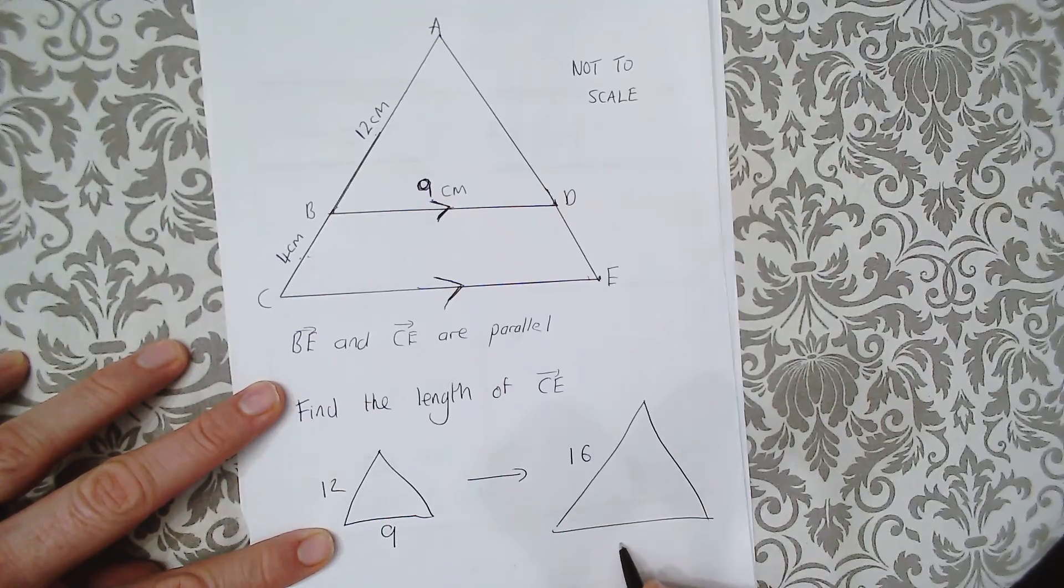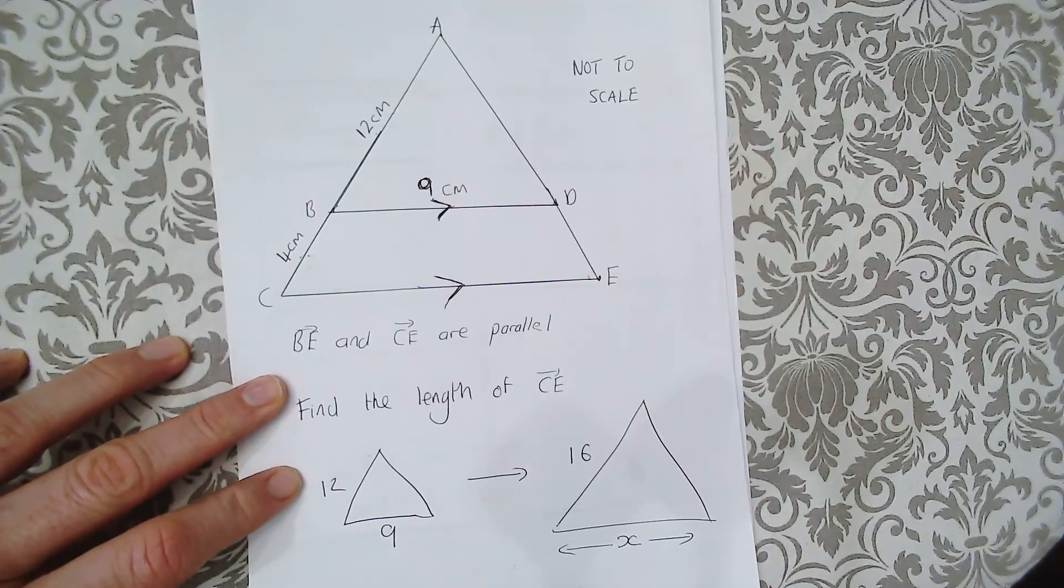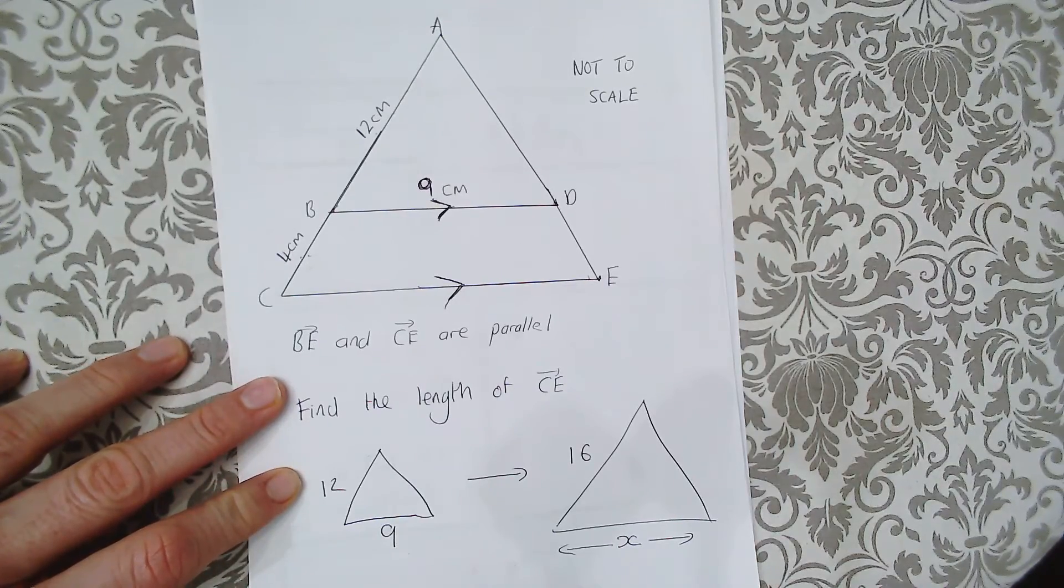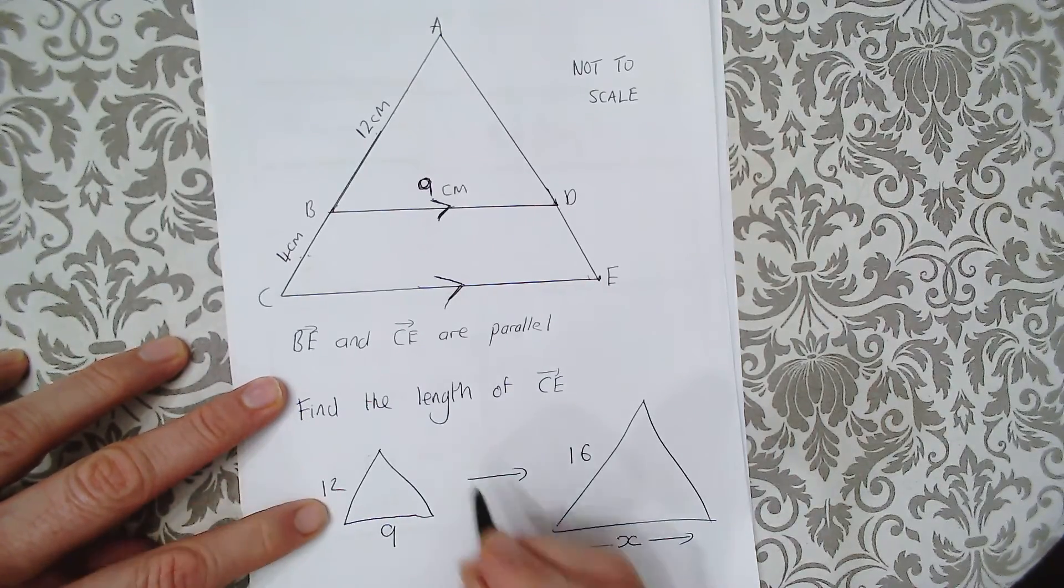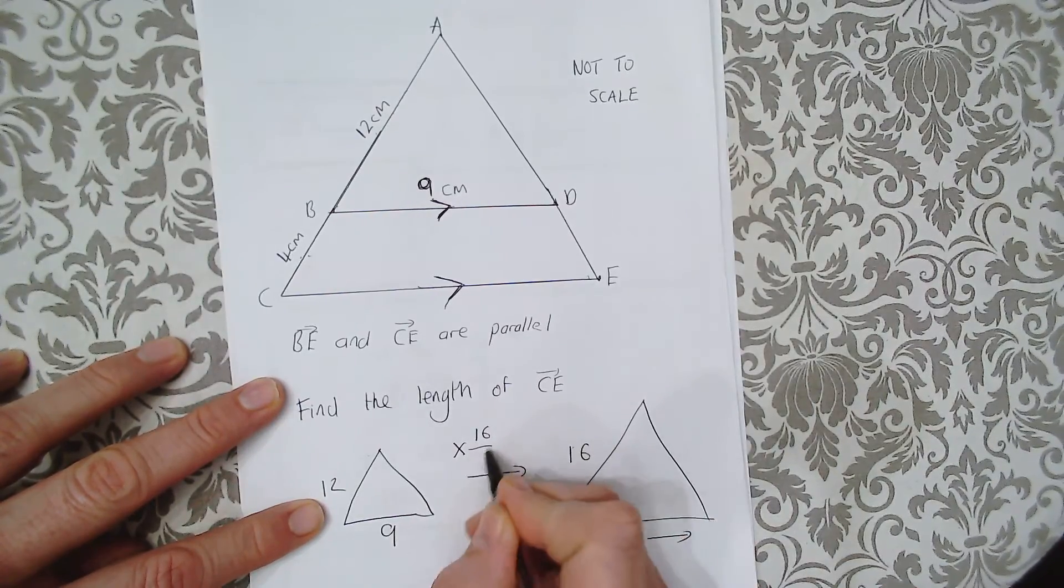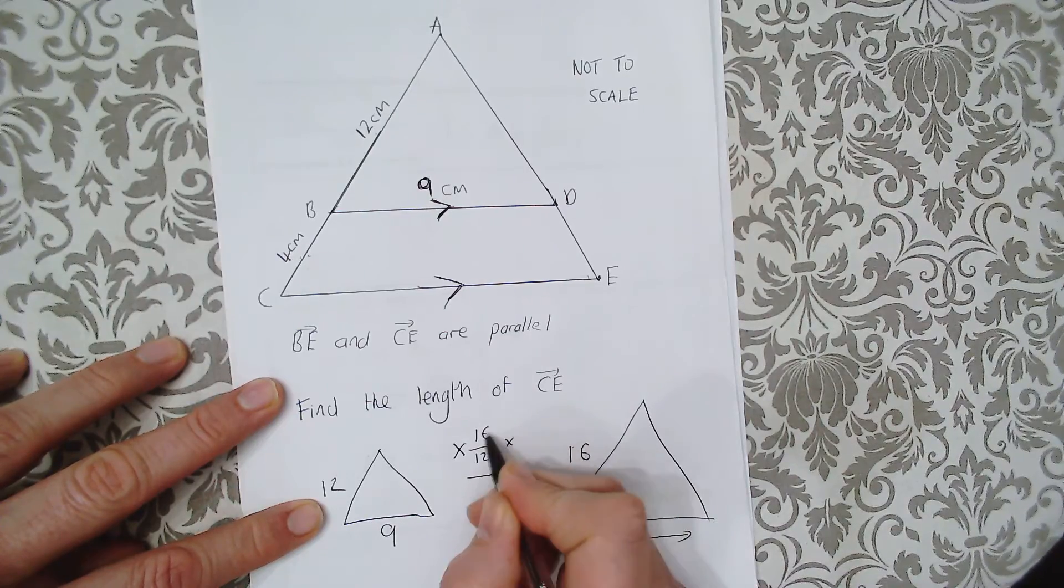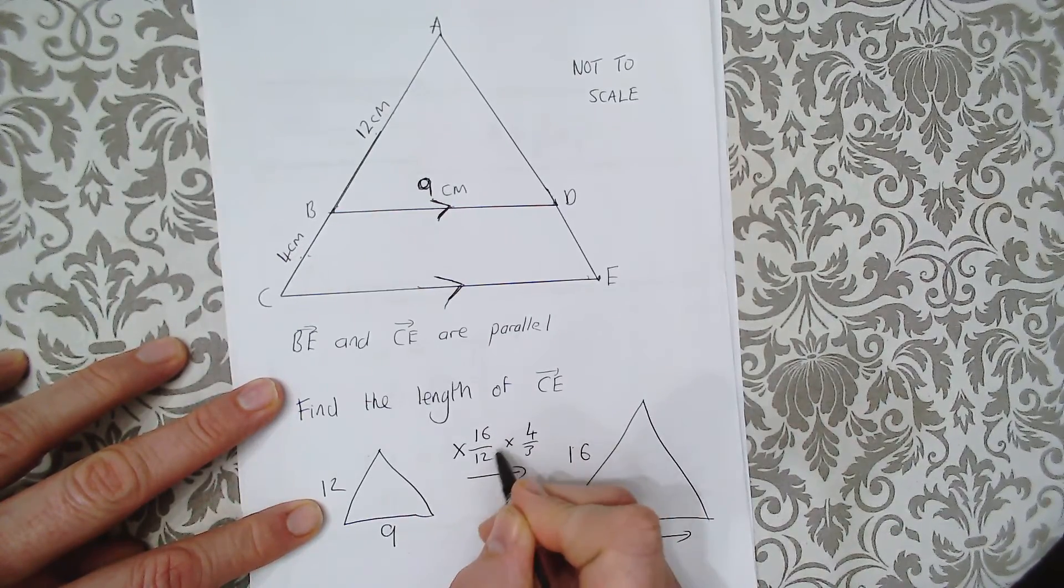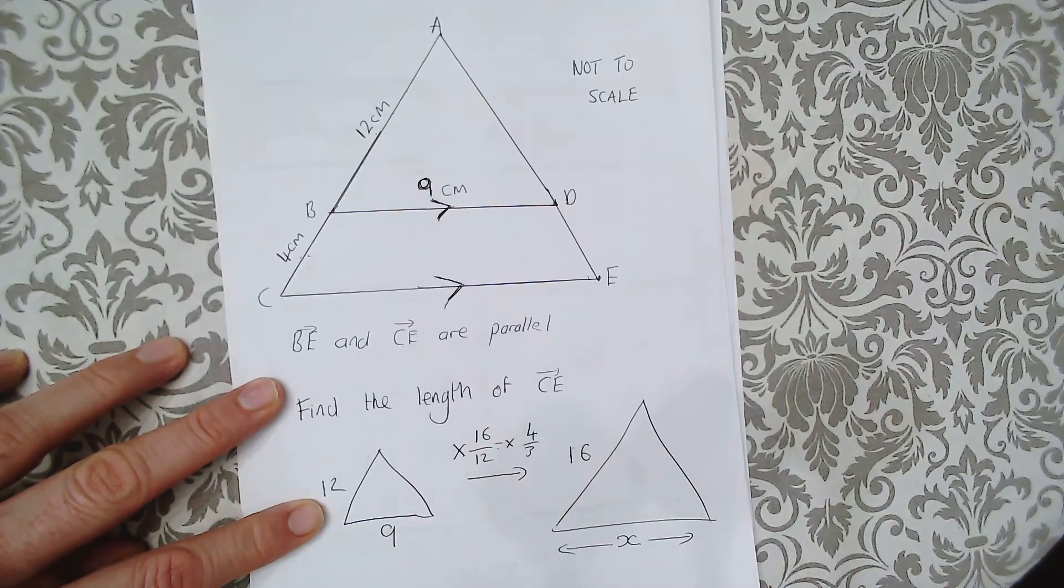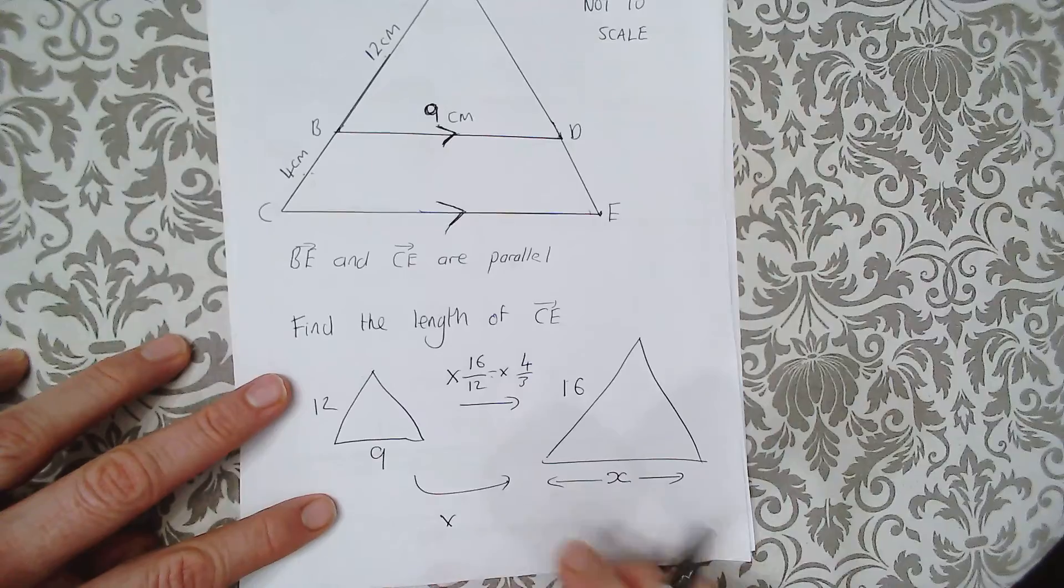Now what is the length scale factor? We're multiplying by 16 over 12. We can simplify that by dividing through by 4, which gives us 4 over 3. So 9 times 4 over 3...